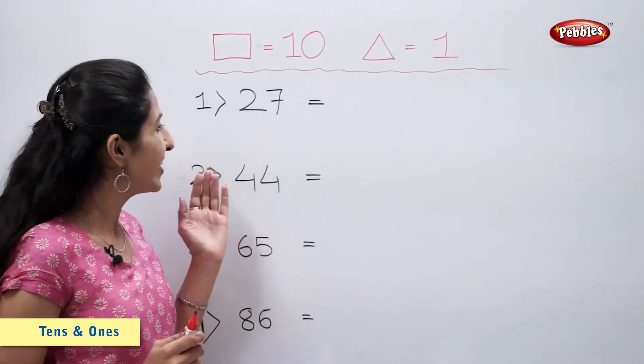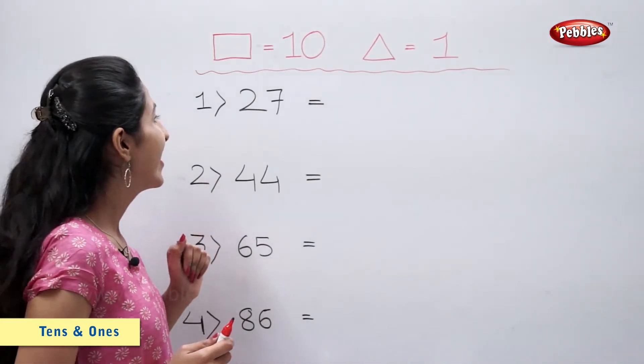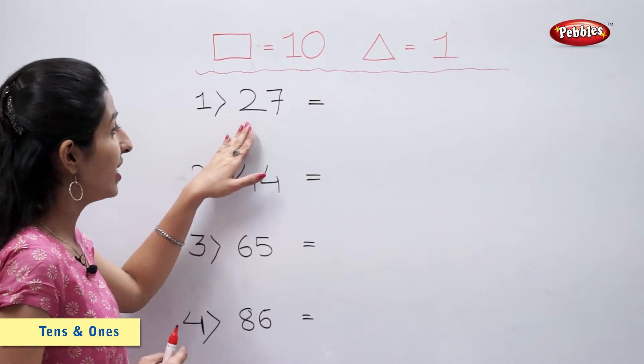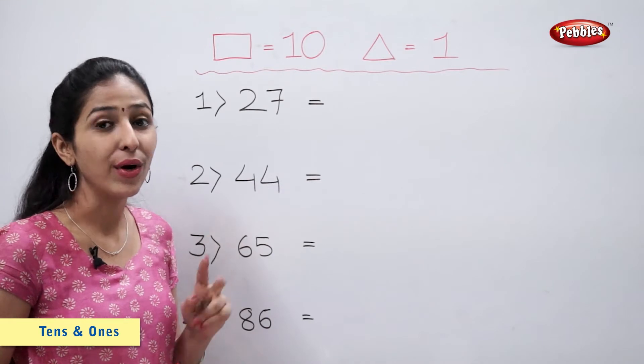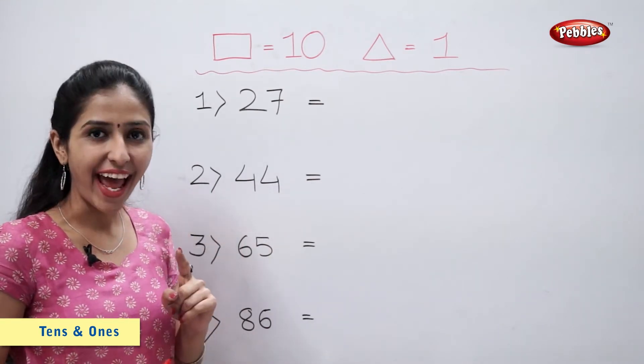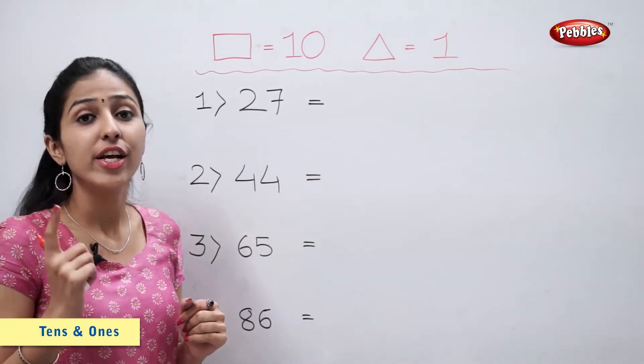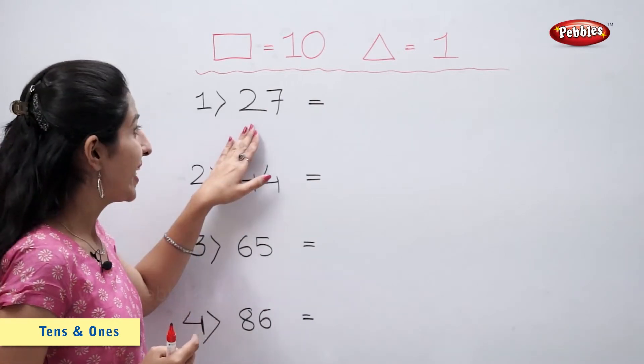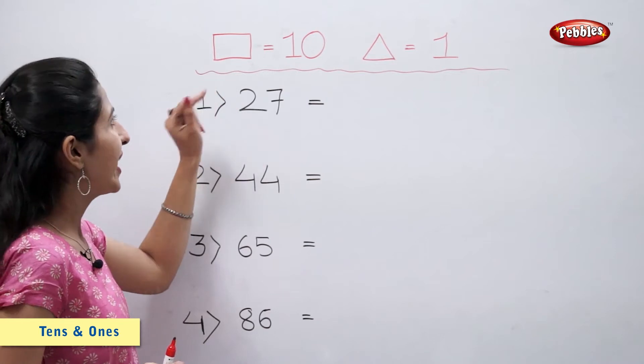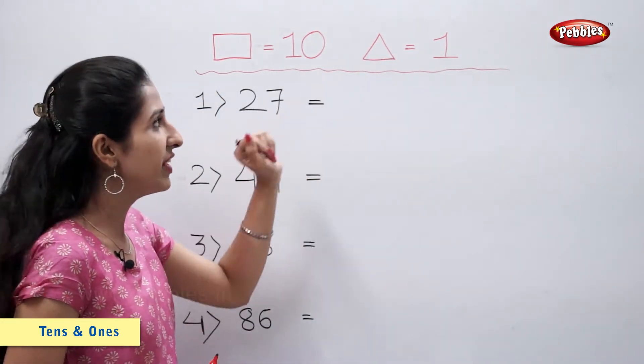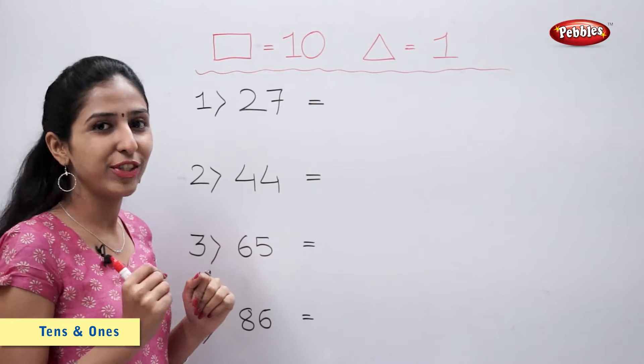Now let's solve these examples. We have number 27. Now 27 is equal to 2 tens and 7 ones. So for making number 27, I will use 2 rectangles and 7 triangles. Let's draw.